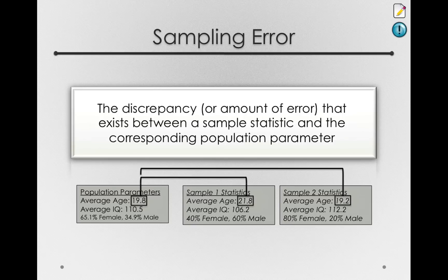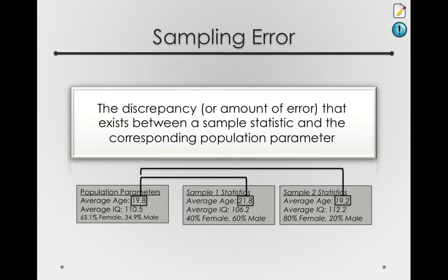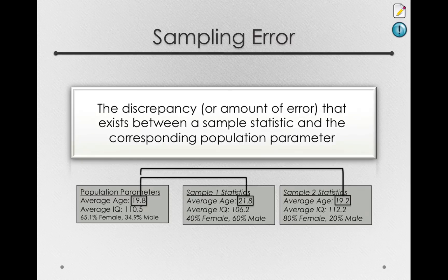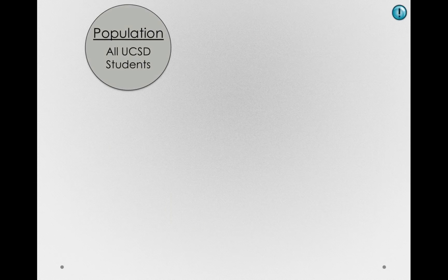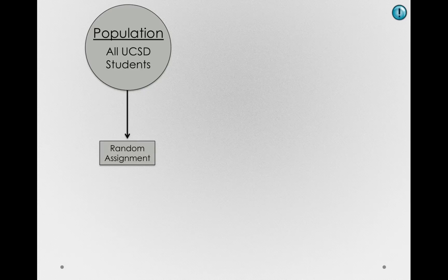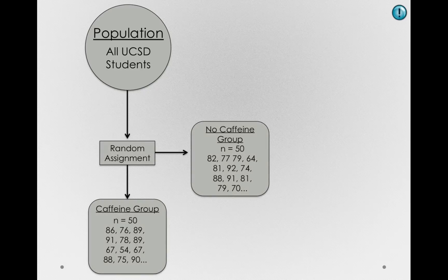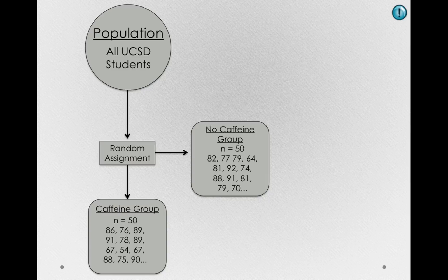Now, let me give you some insight into why sampling error is a problem. Certainly, we know it's present. We know it's going to happen. But why would this be any problem for our research? So let me go forward, and let's go back to that simple experiment where we had the population of all UCSD students. And remember, I said I was going to randomly assign 50 to get caffeine and 50 to get no caffeine before an exam.